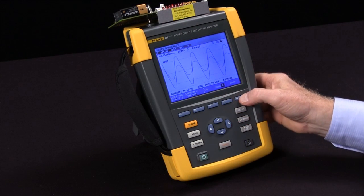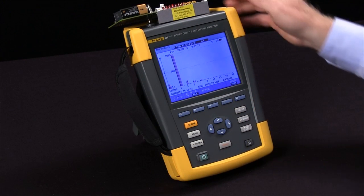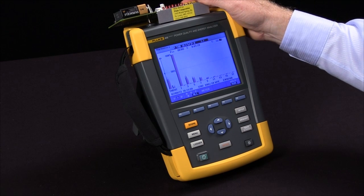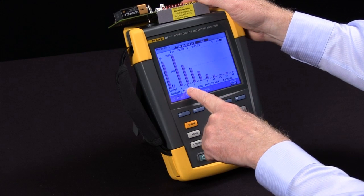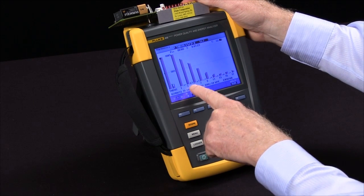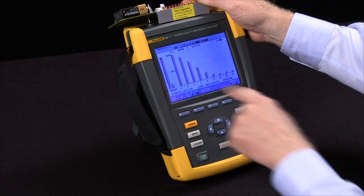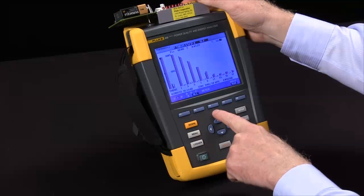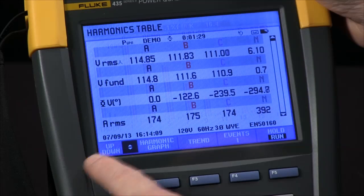Let's go back to my harmonic screen. Again, we see the current waveforms, the third and the fifth being the most prevalent right now. I can switch to meter and see a meter view.